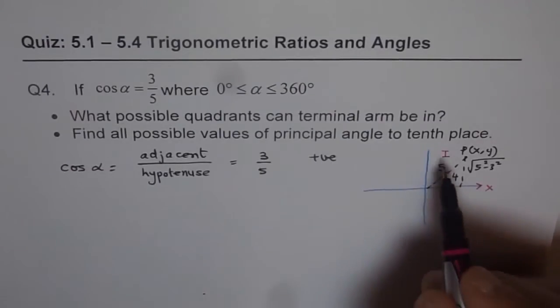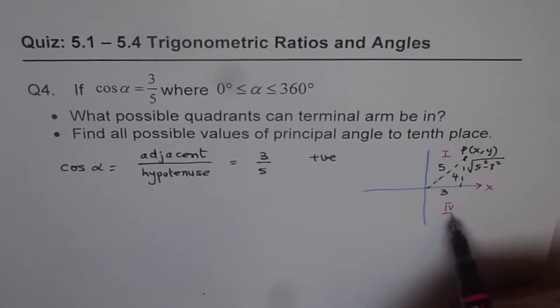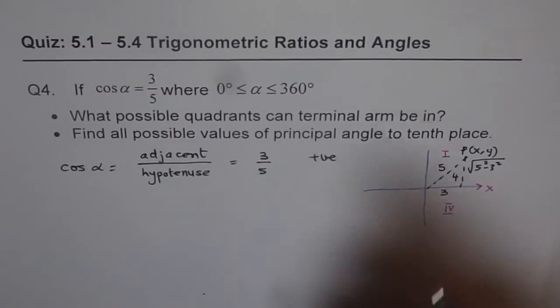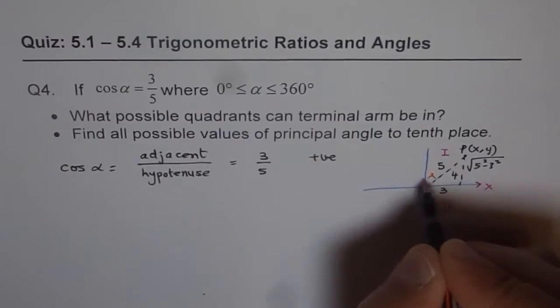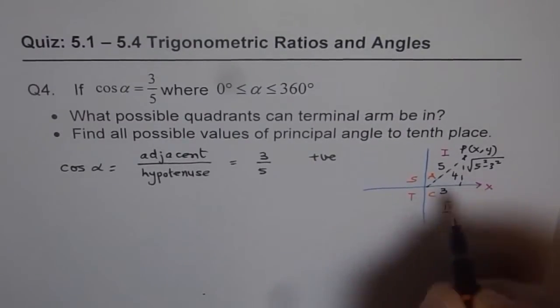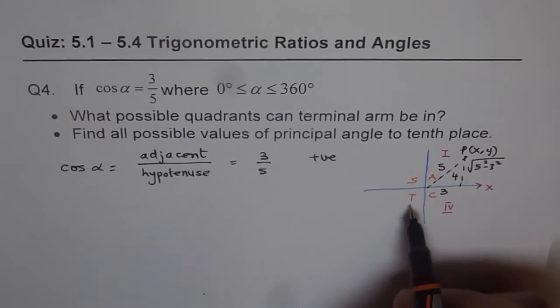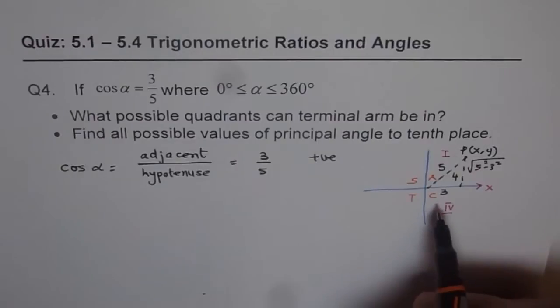So there are two possible situations, that is one way of explaining this. The second way is using the CAST rule. The CAST rule is like this, right? So we have all are positive in quadrant 1, sine in quadrant 2, tan in quadrant 3, but cosine is positive in quadrant 4. So cosine is positive in quadrant 1 and 4.